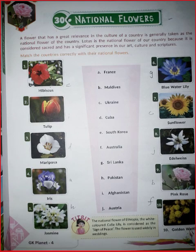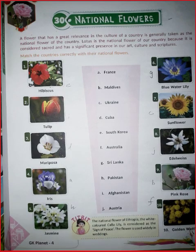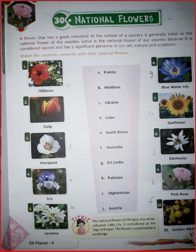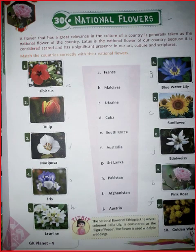Let us revise this with the help of true and false. Hibiscus is the national flower of Australia — no, this is false. Hibiscus is the national flower of South Korea. Tulip is the national flower of Cuba —